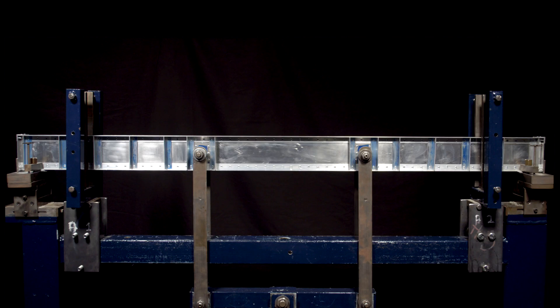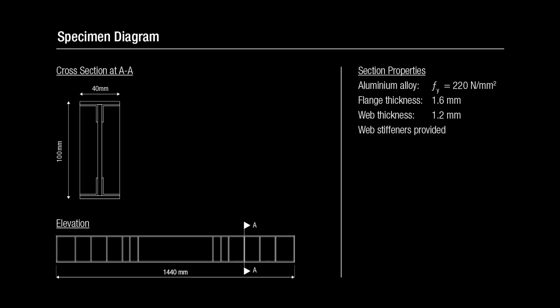This video shows a plate girder being tested under bending. The material used in the test is an aluminum alloy. The web has shear stiffness to prevent it from buckling.